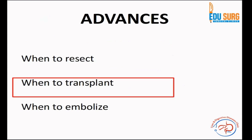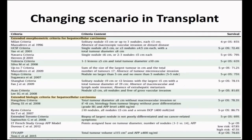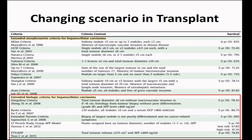A very recent advance in transplant selection criteria: Milan and UCSF criteria have stood the test of time, and while many other criteria have been proposed, none have given outcomes better than Milan. However, biological criteria for selecting HCC patients are now emerging. Tumor biology is now being included — tumor differentiation, alpha-fetoprotein levels, and vascular invasion. These new criteria are known as extended biologic criteria for selecting patients for transplant.